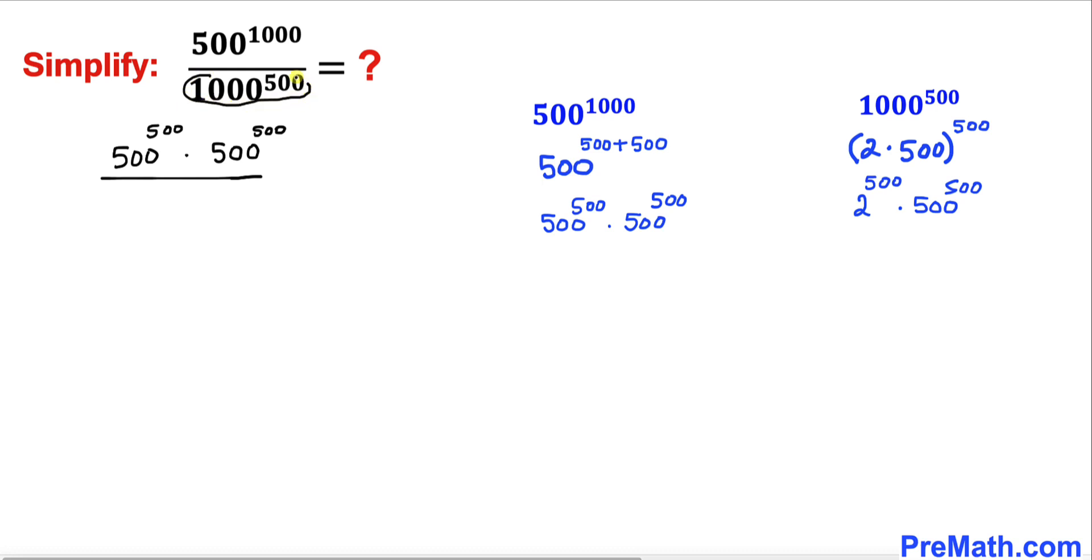So the denominator is going to become simply 2 to the power 500 times 500 to the power 500. And now we can see that this part cancels out with this one.